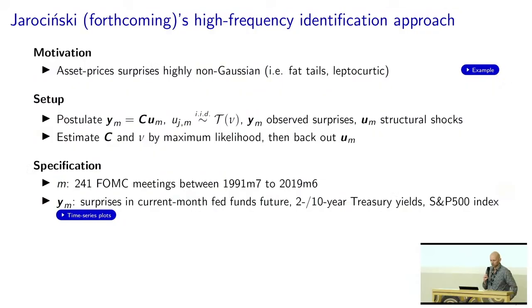He proceeds in the standard way, using the GSS dataset which covers 241 FOMC meetings between 1991 and 2019. He uses four asset price surprises from this dataset: surprises in the current month Fed funds future, the 2-year and 10-year treasury yields, and the S&P 500 index in the vector Y_M. Then he estimates the model and backs out the unobserved structural shocks.